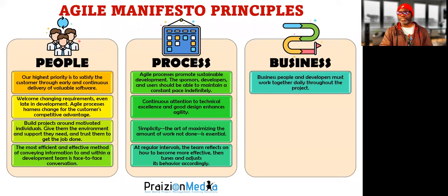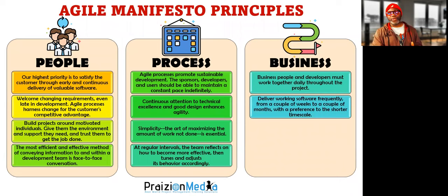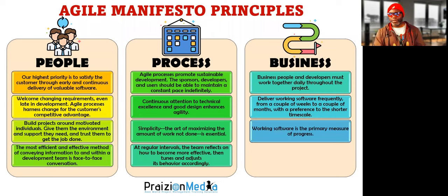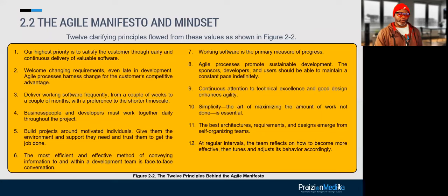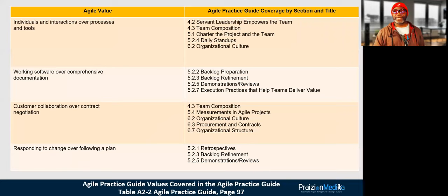Business: business people and developers must work together daily throughout the project. Deliver working software frequently, because you're doing things in small iterations and you need to deliver quickly so that we can inspect and understand if you're going in the right direction. Working software is a primary measure of progress — we don't do percent completes in the world of Agile. And the best architectures, requirements, and designs emerge from self-organizing teams. Those are the 12 principles at a very high level.